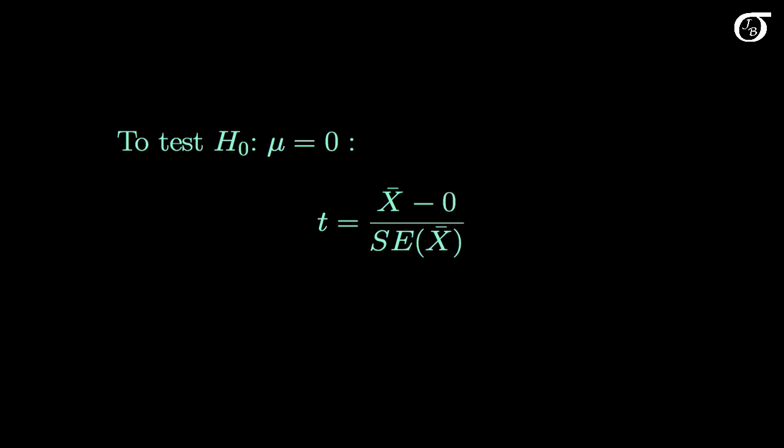We are often interested in testing the null hypothesis that the population mean difference is 0. This might mean that a new drug is not more effective than a placebo on average, or that brain sizes of schizophrenic and non-schizophrenic twins are equal on average. We could test a different hypothesized value, but 0 is by far the most common one.